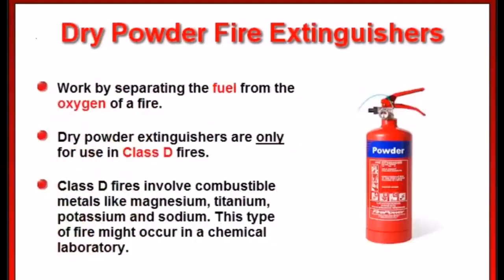Dry powder fire extinguishers work by separating the fuel from the oxygen of a fire. These are only for use in class D fires that involve combustible metals like magnesium, titanium, potassium, and sodium.